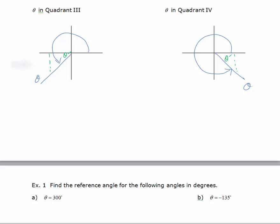If your angle falls in the third quadrant, you drop a perpendicular and theta prime — your reference angle — is that acute angle made with your terminal side and the x-axis. And if you have a fourth quadrant angle, theta star or theta prime is that acute angle made when you drop a perpendicular to the x-axis.